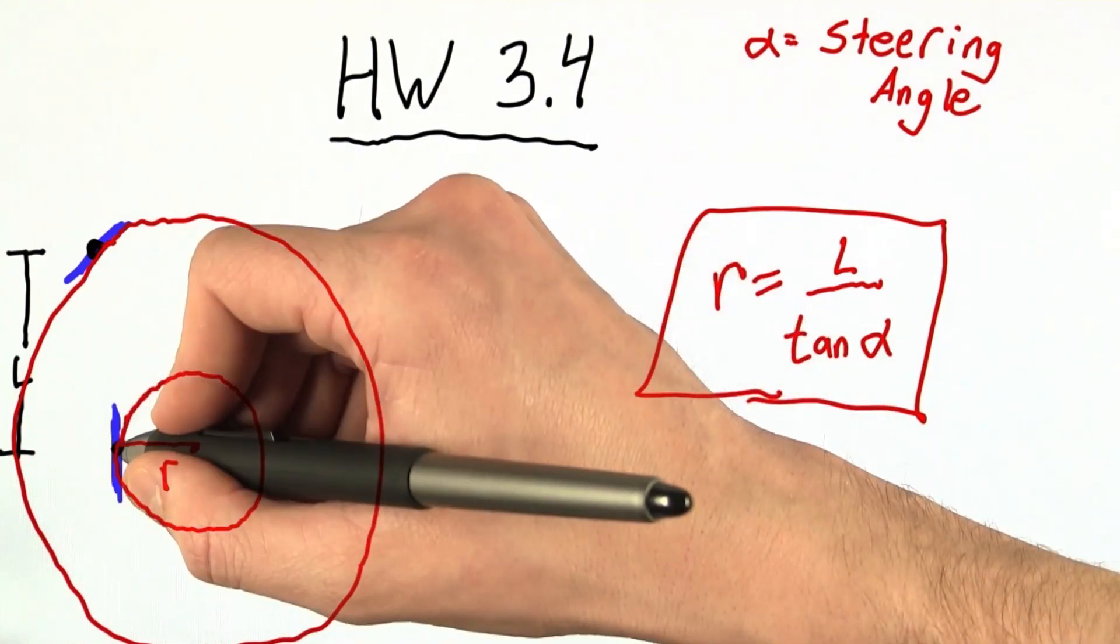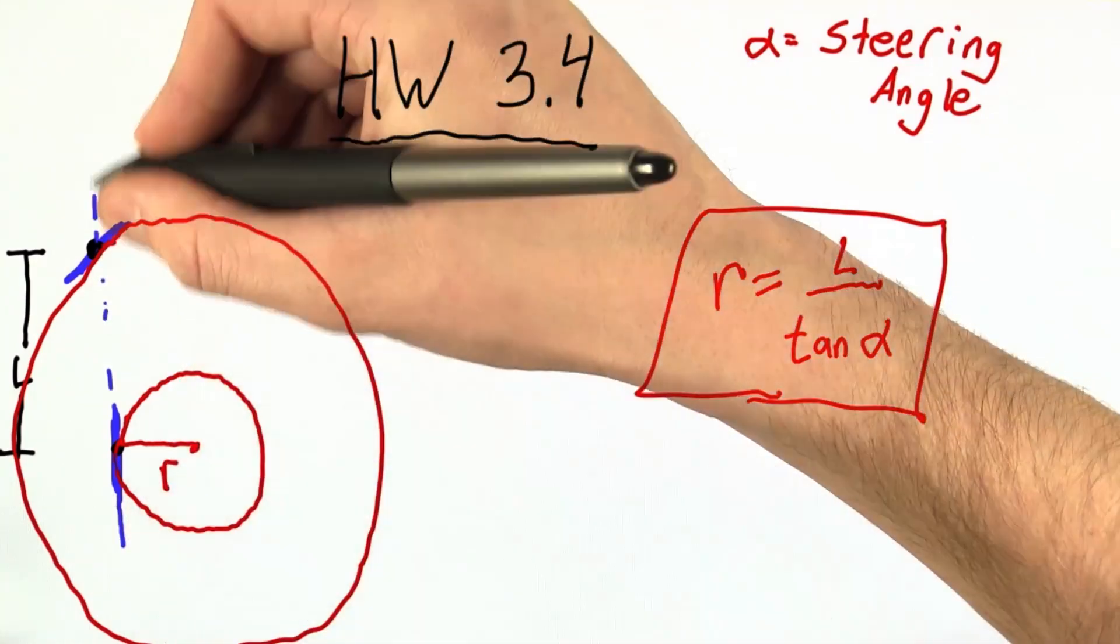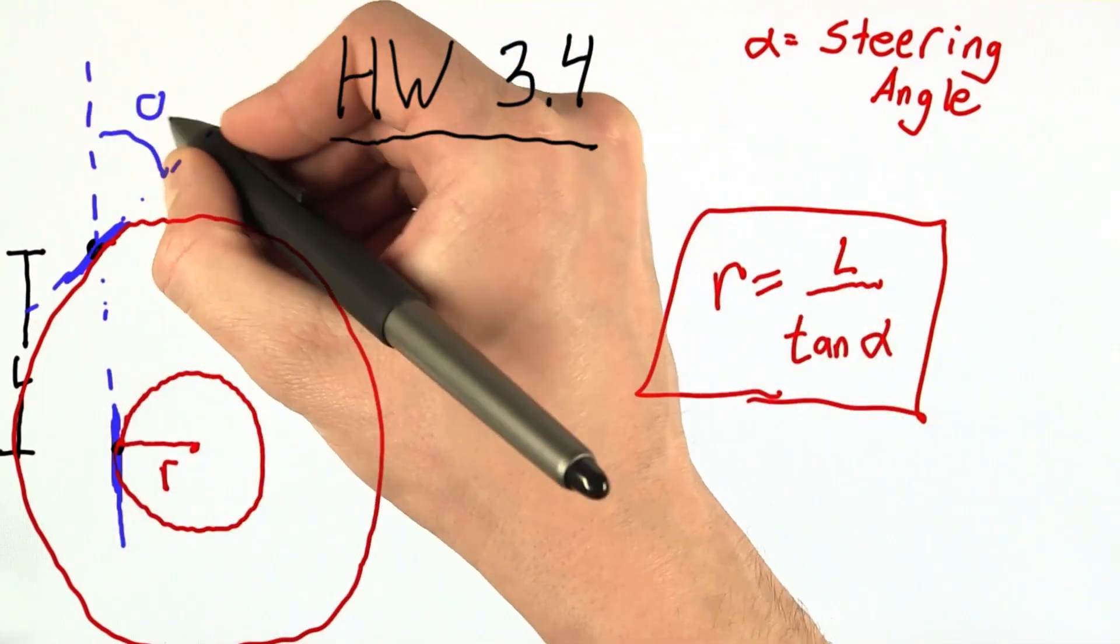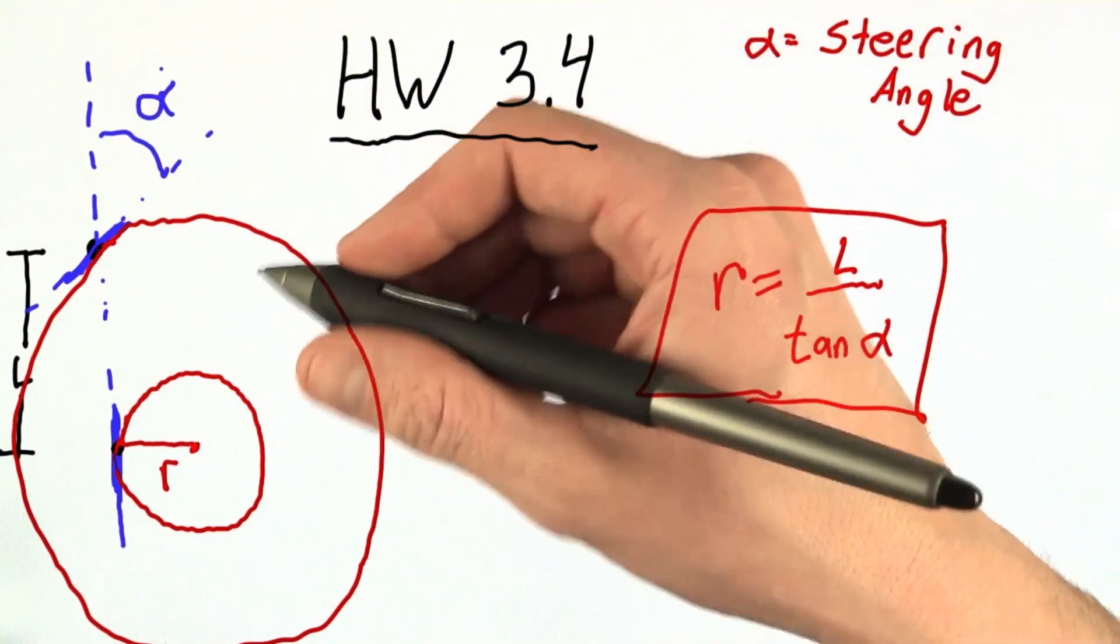And we can see that the line connecting these tires defines an axis. And here we have our steering angle, alpha, from here. And now we can do a little bit of geometry.